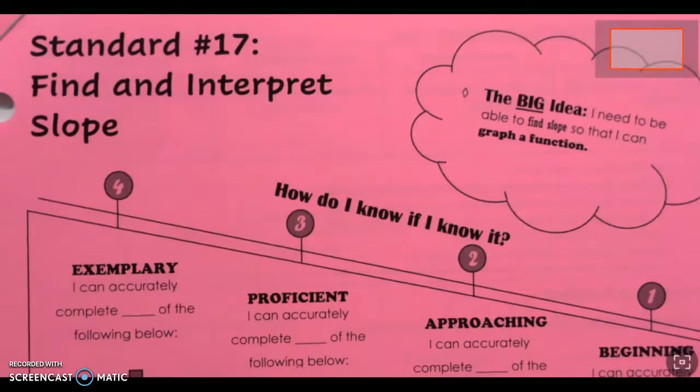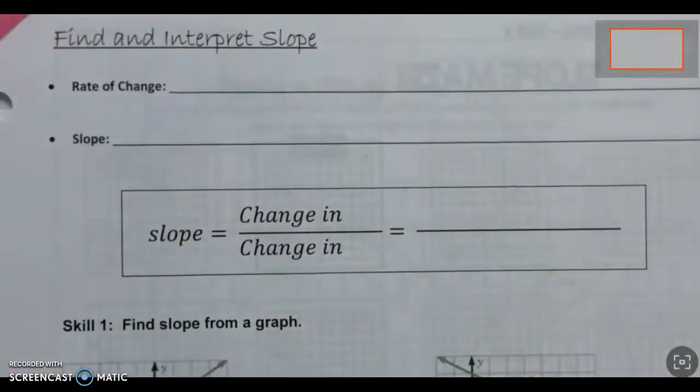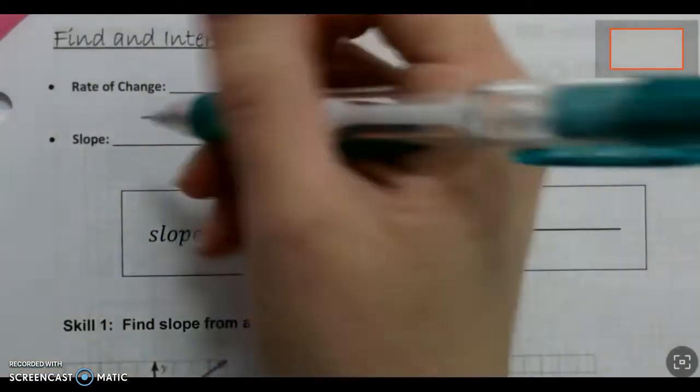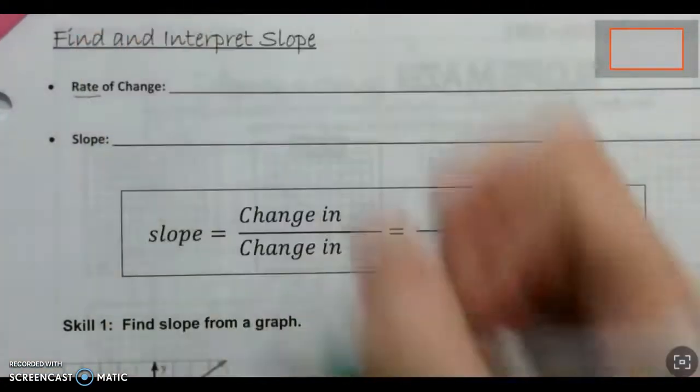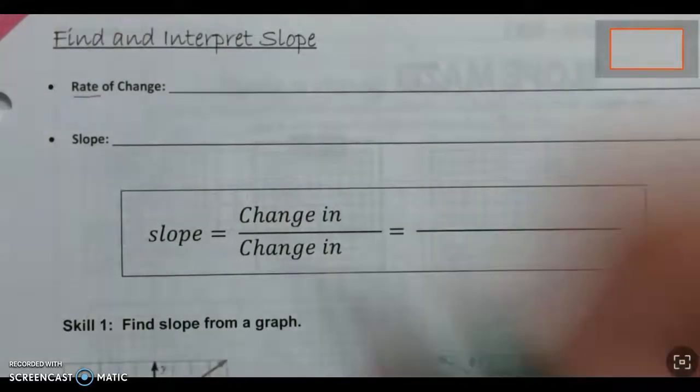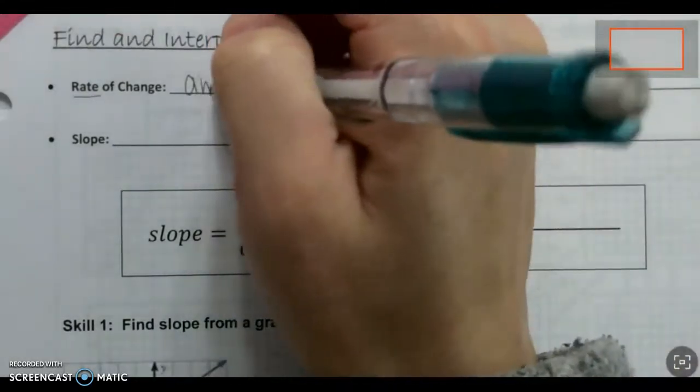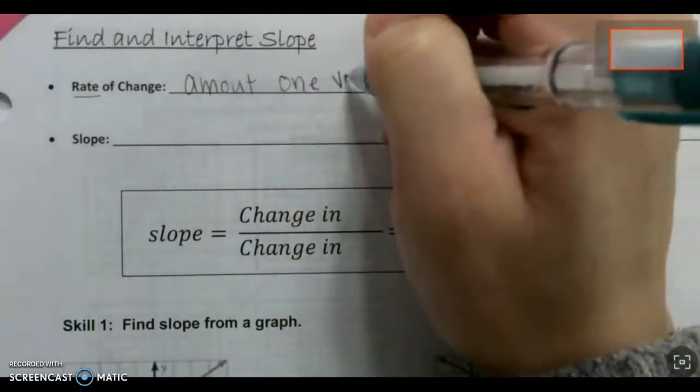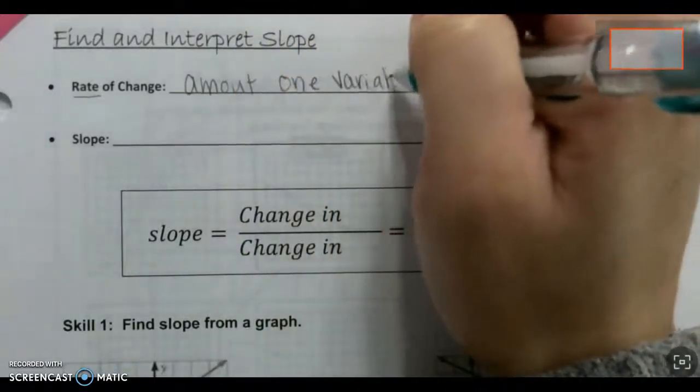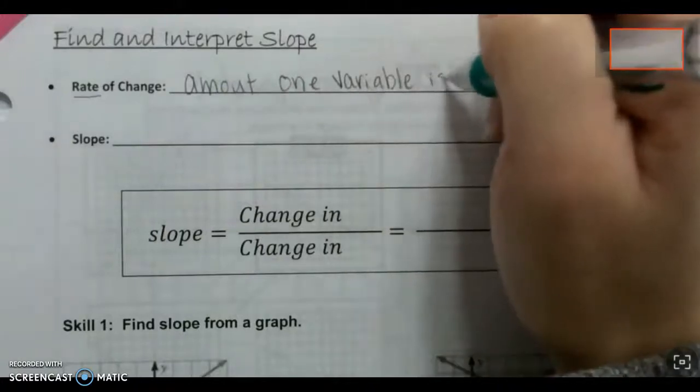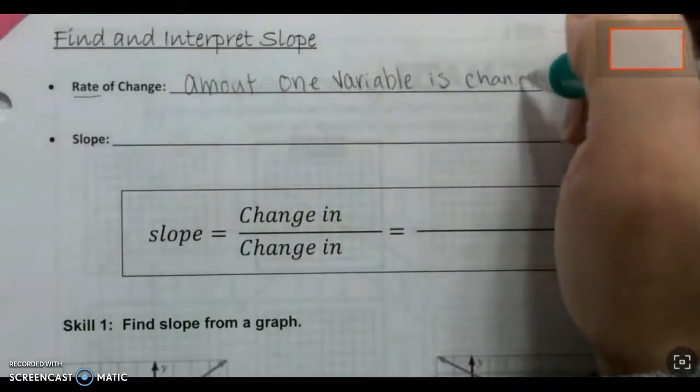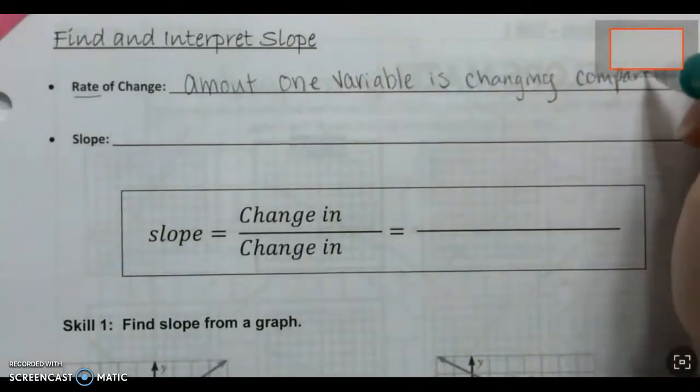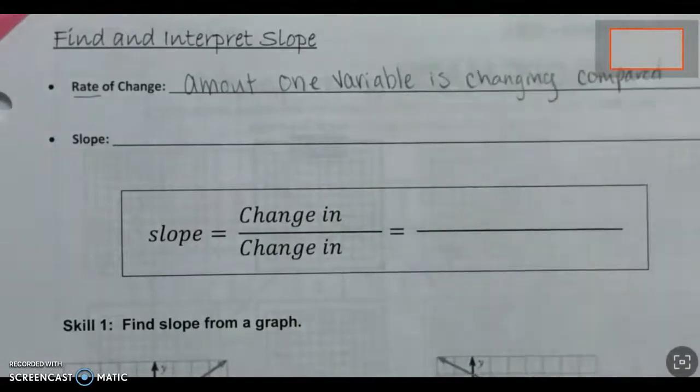Let's get into some vocabulary. Turn the first page of the pink packet. The first thing is rate of change. The rate of change is just how much something is changing, the amount that one variable is changing compared to the other.